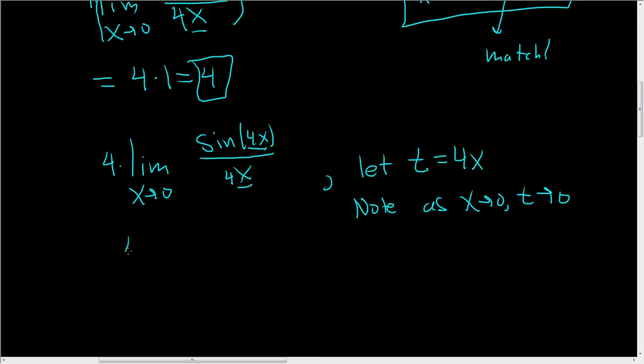You can rewrite our limit as 4 times the limit as t approaches 0. This will be sine t over t. Now it really matches the formula. There's no 4 anymore, it's just t. So this is 4 times 1, which is equal to 4.